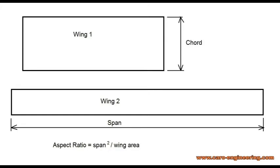The aspect ratio and how it is calculated is illustrated with these two wings. Wing 1 has a small aspect ratio, wing 2 has a large or high aspect ratio. For example, an aspect ratio of 5 is considered low and an aspect ratio of 20 is high.